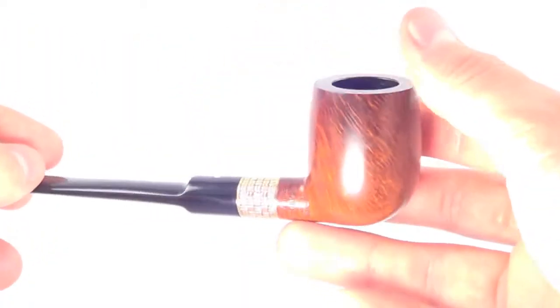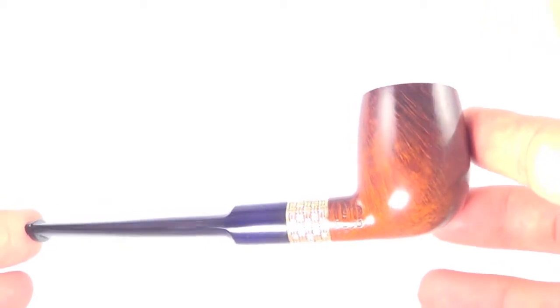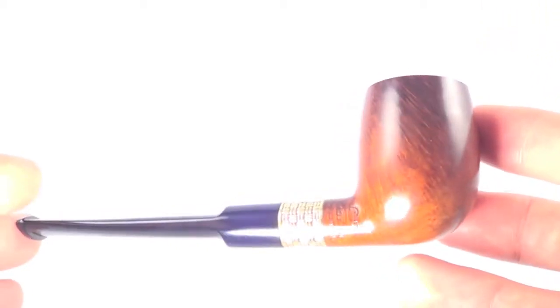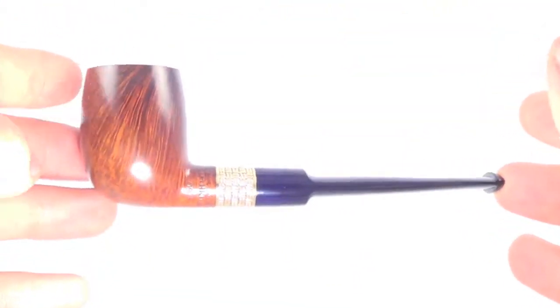Again, Group 4 Root Briar by Dunhill with the flush gold band. Ready to be enjoyed and admired by its next owner. Enjoy, that's it.